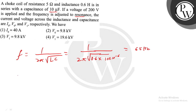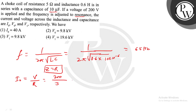Now, what is asked from us? What will be the current in resonance condition? In resonance condition, the current is V by R, because Z equals R at resonance. So V is 200 and R is 5 ohm, giving us 40 ampere.